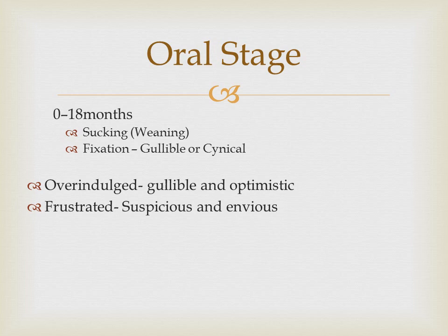The first stage is the oral stage, from zero to 18 months. Everything is centered around the mouth — toys, hands, sucking on food. If you are overexposed — for example, too much pacifier or bottle use — this can lead to being gullible and optimistic. If you don't have enough, maybe lacking adequate food, that could lead to being suspicious and envious.